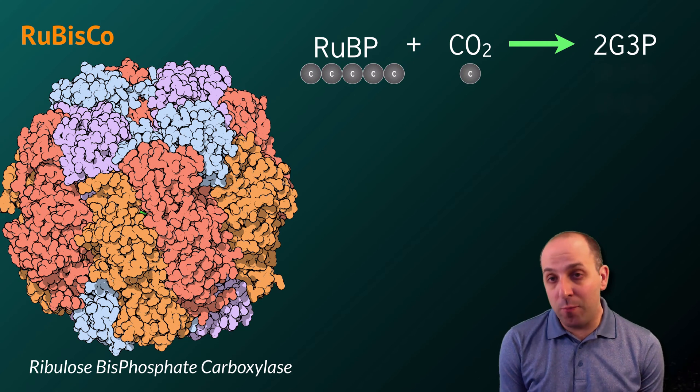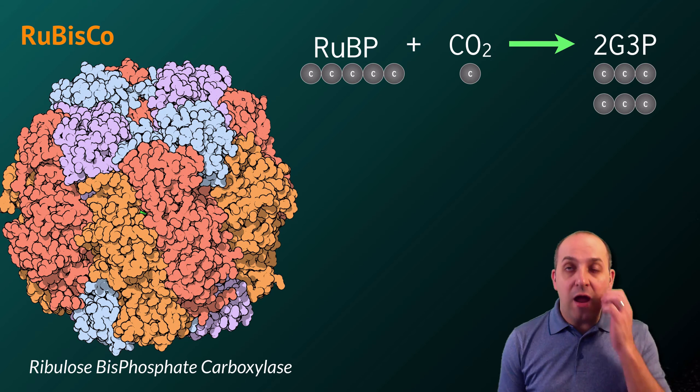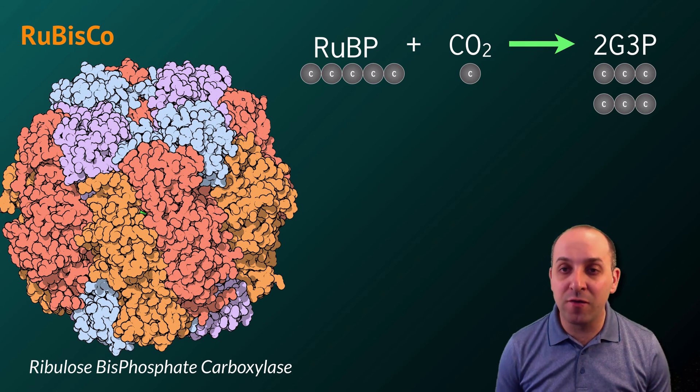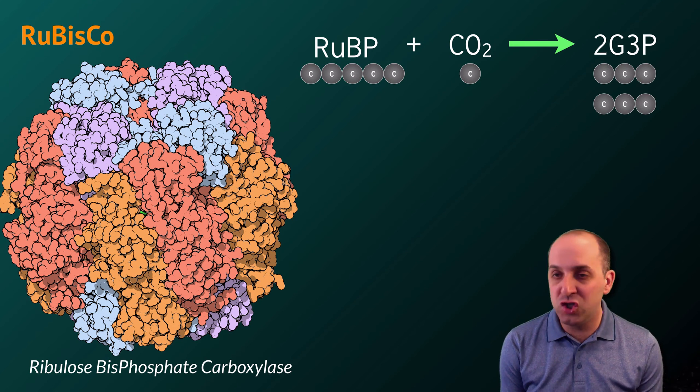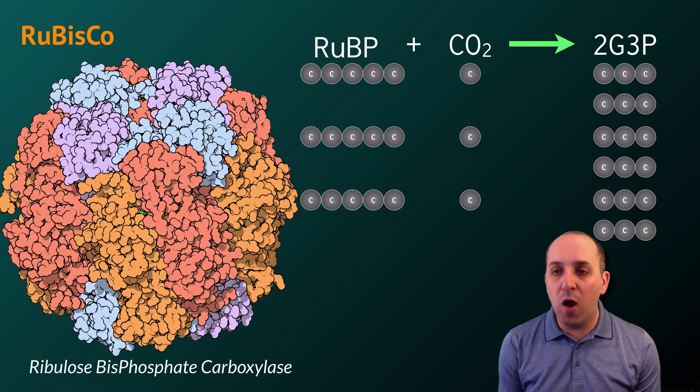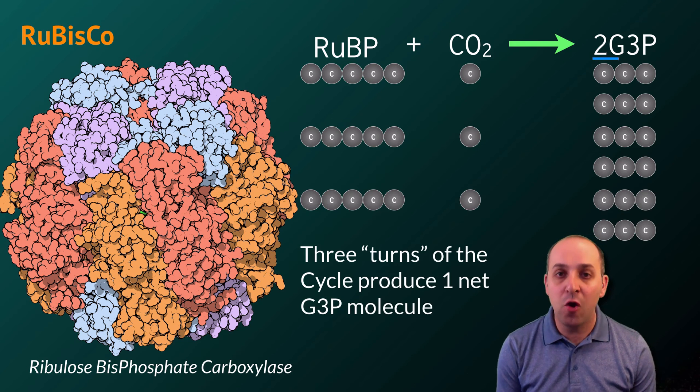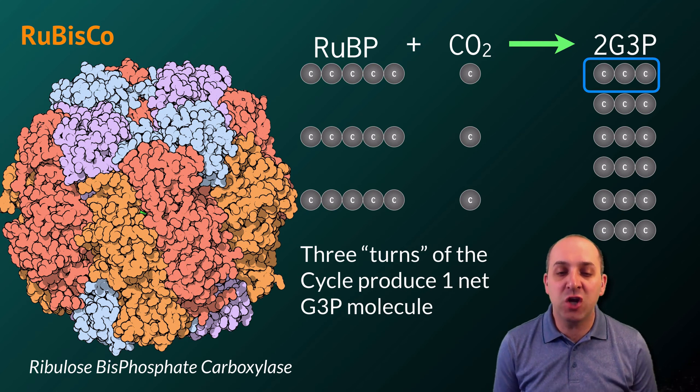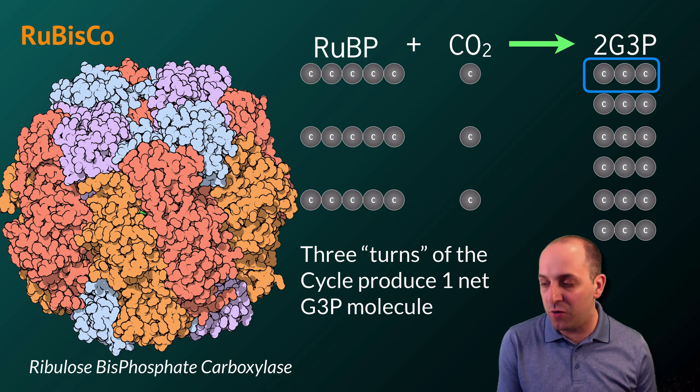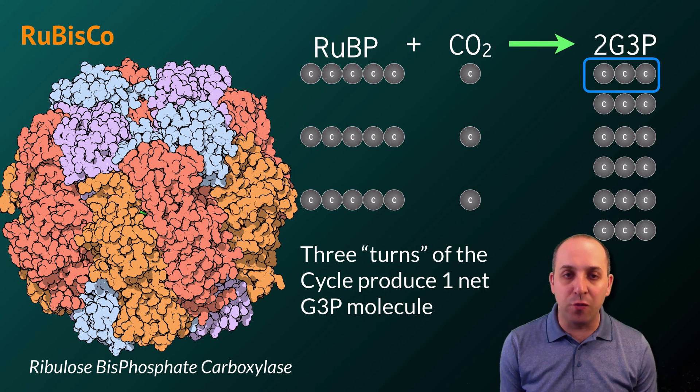RUBP has five carbons and carbon dioxide has one. After the conversion that happened following this incorporation, you will produce two G3P molecules. In order to net one G3P to take out of the Calvin cycle, RUBISCO has to do this three times. We often say that we need three turns of the Calvin cycle to produce one net G3P molecule.